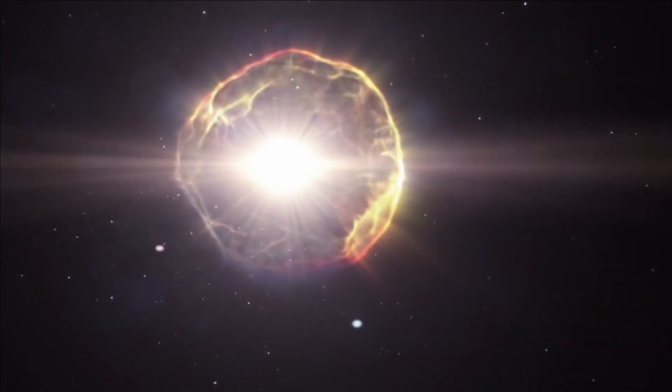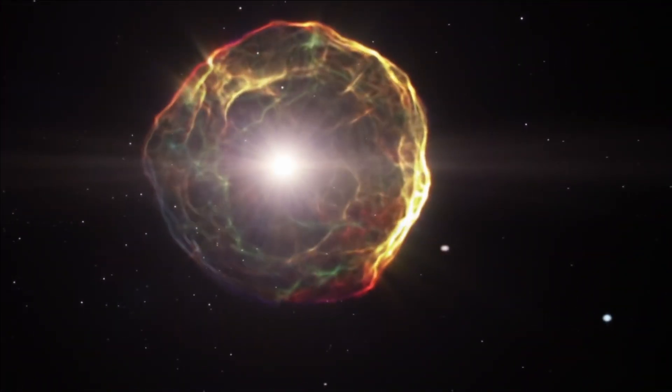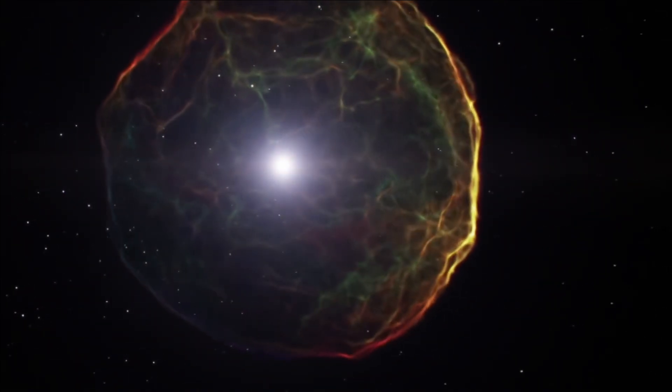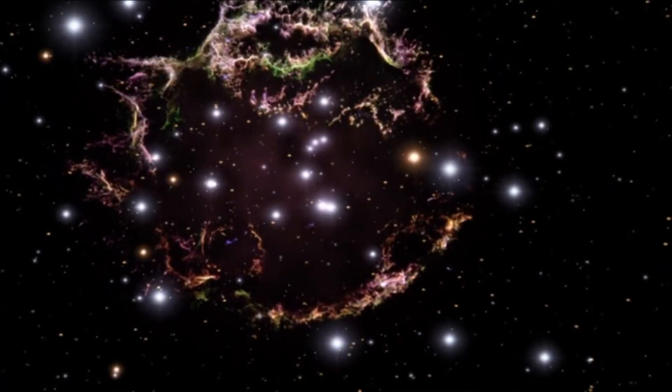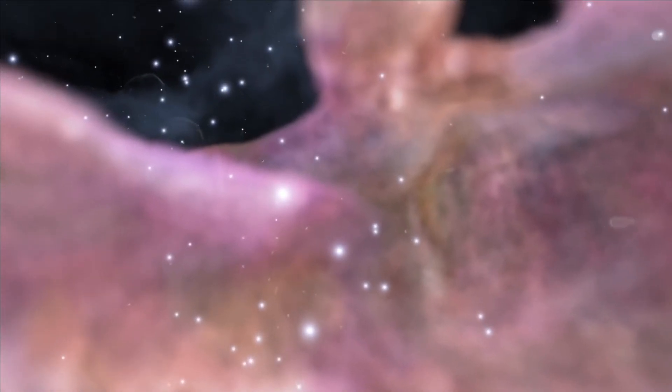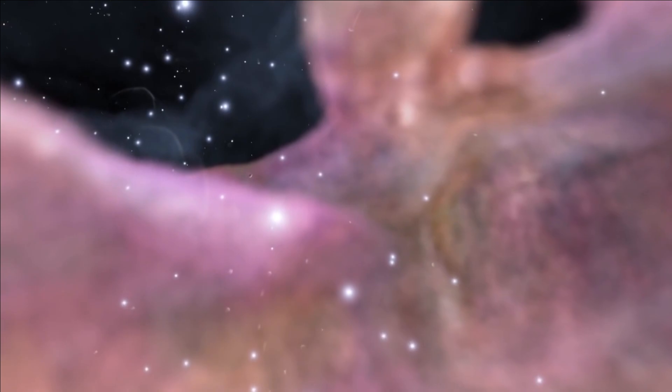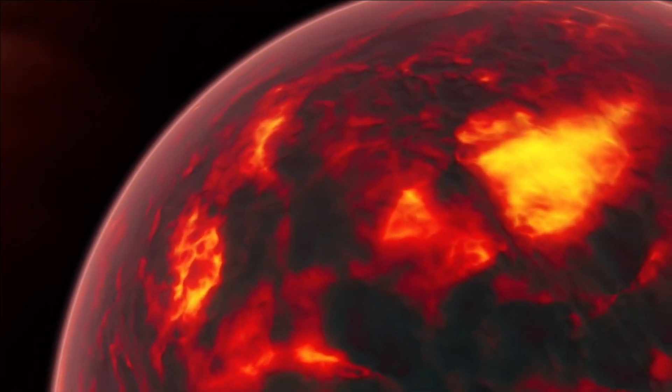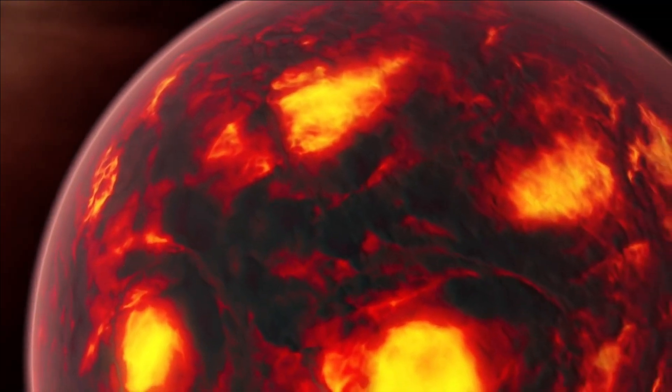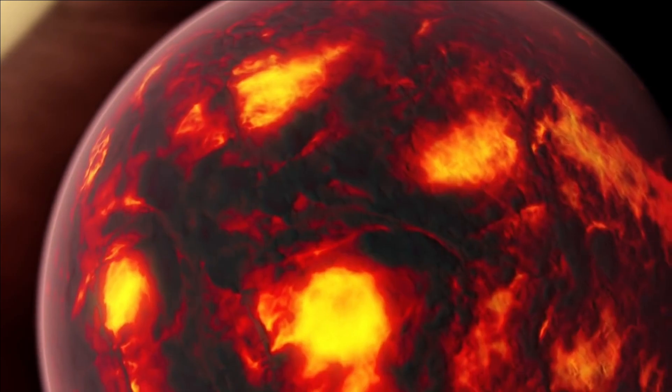NASA's revelation about HIP 65426-b, essentially a massive gas sphere lacking solid ground, dismisses the possibility of it being a habitable space for humans. Photographing exoplanets is typically challenging due to their proximity to bright stars, impeding visibility. The Webb Telescope successfully overcame this hurdle by capturing images of the planet independently from its star.